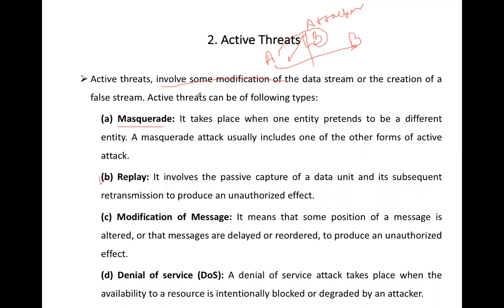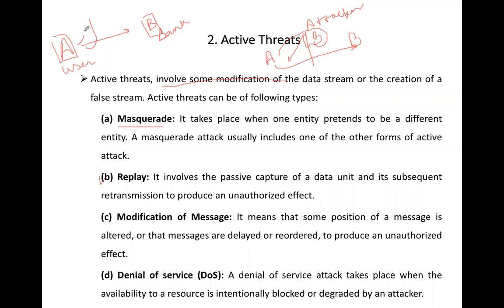The second active threat is Replay. Suppose A is a user and B is a bank. The attacker captures the user's information and replays it to get access on behalf of the intended recipient. This concept is called replay.